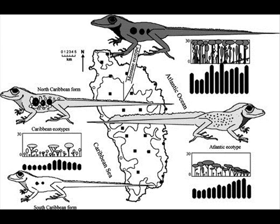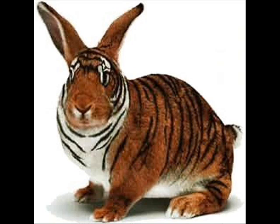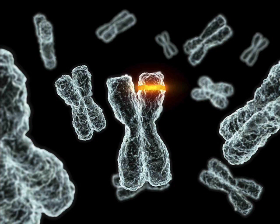In addition to variation in populations, species also exhibit geographic variation — the differences in the genetic composition of separate populations. An important example is a cline, a graded change in a character along a geographic axis. A mutation is a change in the nucleotide sequence of an organism's DNA. Most mutations occur in somatic cells and are lost when the individual dies. Point mutations can have a significant impact on phenotype, as in sickle cell disease, though most point mutations are harmless. Chromosomal mutations that delete or rearrange many gene loci at once are almost always harmful, though in rare cases chromosomal rearrangements may be beneficial.